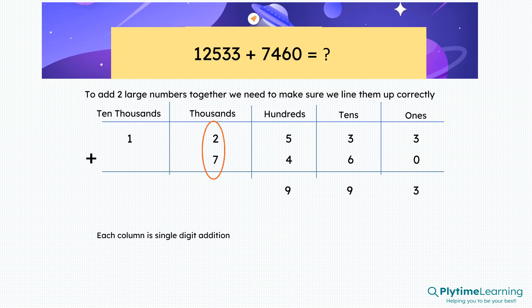The next column, the thousands, two plus seven is nine. And finally, the ten thousands, one plus zero is one. It's a total of 19,993.